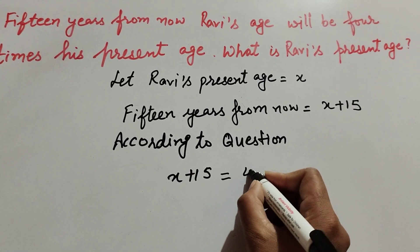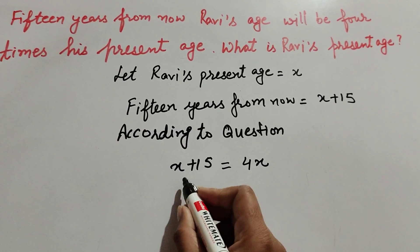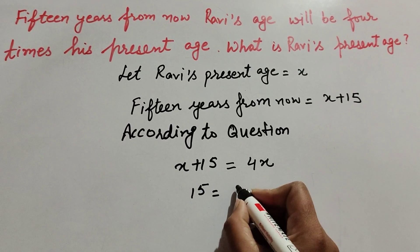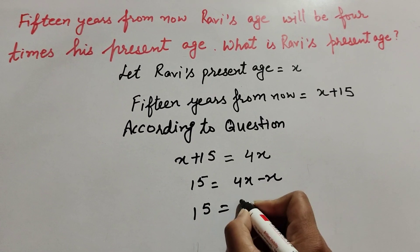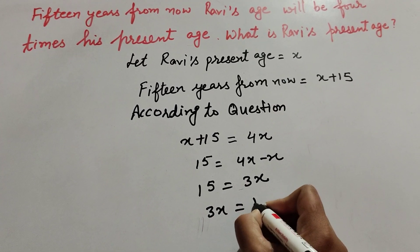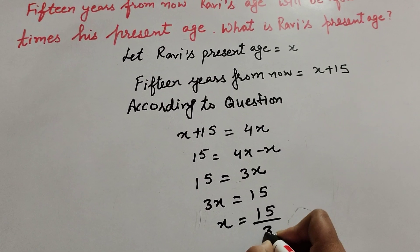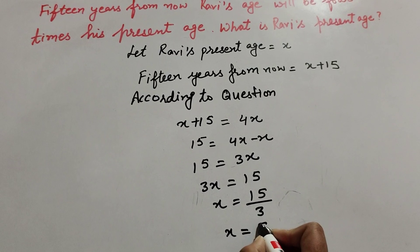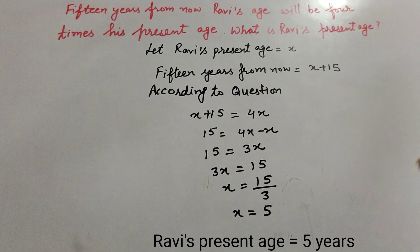His present age is x, so x plus 15 equals 4x. Transposing x to the right-hand side: 15 equals 4x minus x, which gives 15 equals 3x. Therefore x equals 15 divided by 3, which equals 5. So Ravi's present age is 5 years.